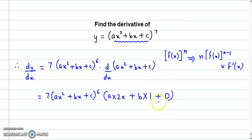So finally we have 7 times (ax² + bx + c)⁶ into, now a times 2x becomes 2ax plus b times 1, that's b, so this is the value for dy/dx.